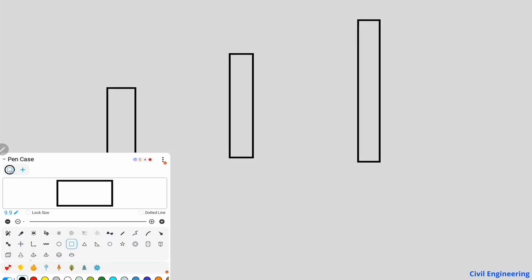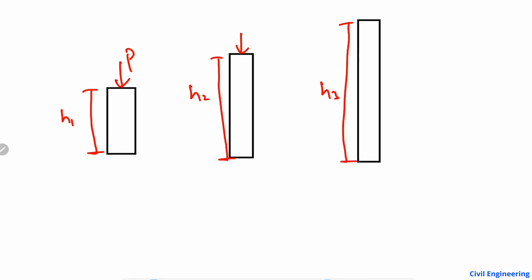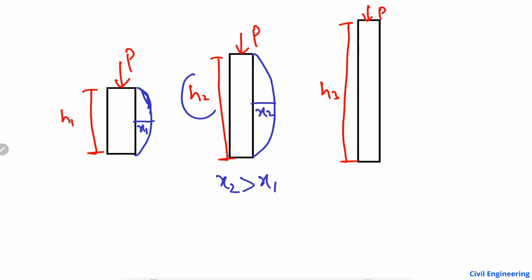Due to the difference in length, this column has height h1, the second has h2, and the third is an RC column with height h3. If I apply the same load P on all three columns, the column with a higher height will show higher buckling. So x2 is greater than x1, because the height of the second column is greater than the first.